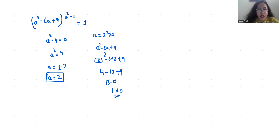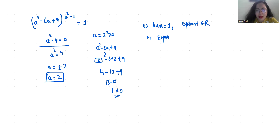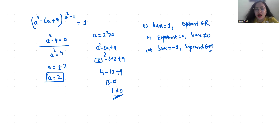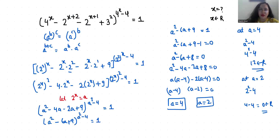We checked with two values. When the base equals 1, the exponent gives us a real solution. When the exponent equals 0, the base cannot be zero — and here it gives us 1, so that's valid. And when the base is negative 1, the exponent must be even. These are the three conditions we check. I hope it's clear and you find it useful. Please give a thumbs up, subscribe to my channel, and stay tuned for more upcoming videos.